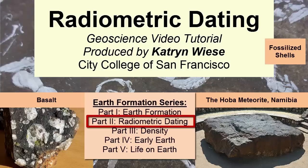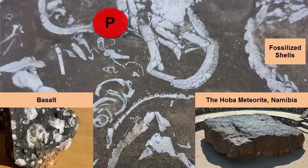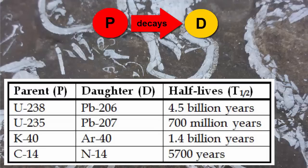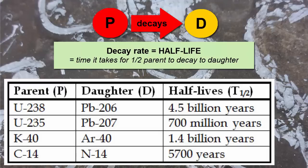First step: we need to identify a radioactive parent material that is present in our rock and that decays into daughter material at a rate that ensures enough of both parent and daughter in the rock to measure them. There are a number of parent-daughter radioactive decay pairs, and each pair has a different decay rate known as a half-life. Half-life is the amount of time it takes for one half of the original parent radioactive material to decay into daughter product.